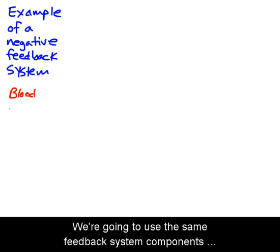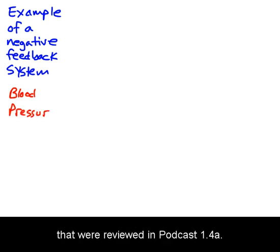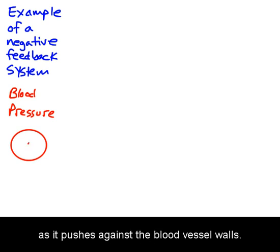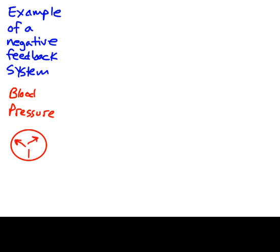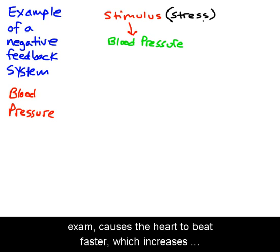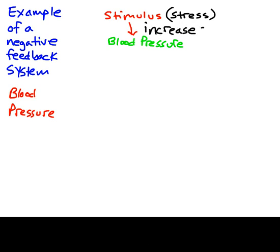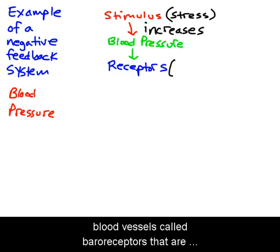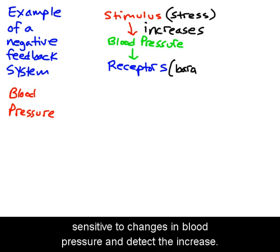We're going to use the same feedback system components that were reviewed in Podcast 1.4A. Blood pressure is the amount of force generated by blood as it pushes against the blood vessel walls. A stimulus, like the stress one feels before an important exam, causes the heart to beat faster, which increases blood pressure. There are specialized nerve receptors in the walls of blood vessels, called baroreceptors, that are sensitive to changes in blood pressure and detect the increase.